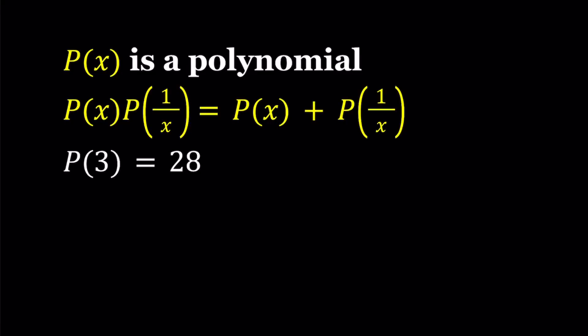Hello everyone. In this video, we're going to be solving an interesting polynomial equation. So P of X is a polynomial, and we have P of X times P of 1 over X equals P of X plus P of 1 over X. And we're also given that P of 3 is equal to 28.